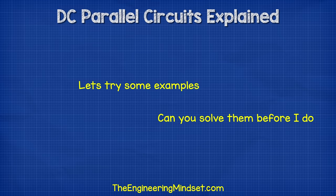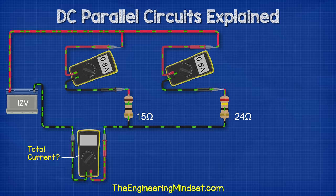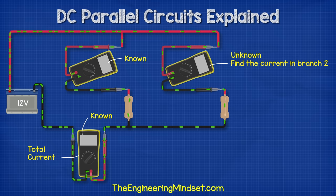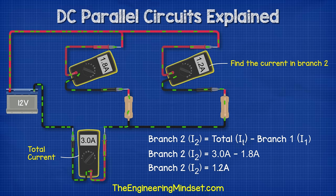Let's see some more detailed explanations on how to calculate this — see if you can solve this before I do. Take this simple parallel circuit with two resistors and a 12 volt battery. Resistor one is 15 ohms and has a current of 0.8 amps. Resistor two is 24 ohms and has a current of 0.5 amps. The total current equals the sum of the currents in all the branches: 0.8 amps plus 0.5 amps is 1.3 amps. What if we know the total current and the current in one branch? We just subtract. In this example, we have a 12 volt battery with a total current of three amps and branch one has a current of 1.8 amps, so the current in branch two is three amps minus 1.8, which gives us 1.2 amps.